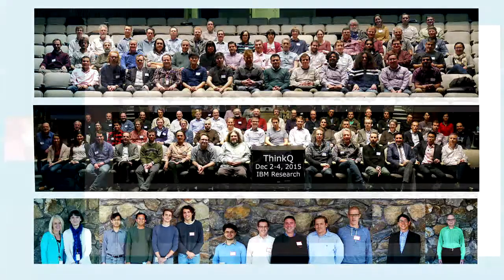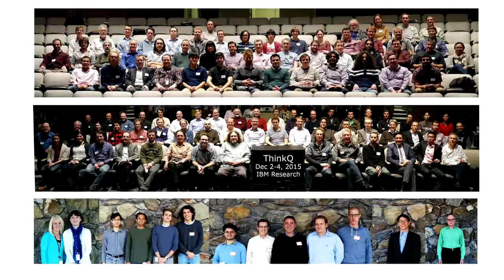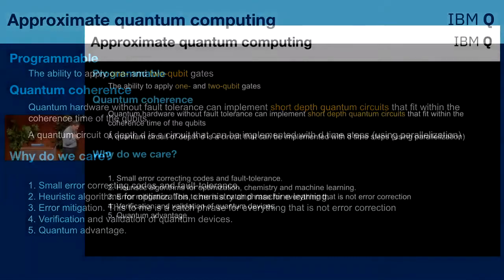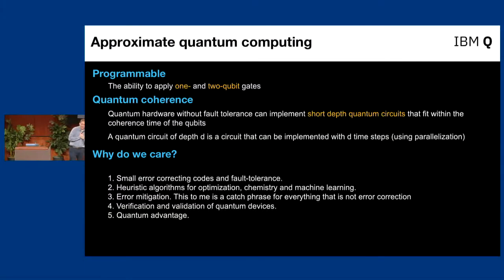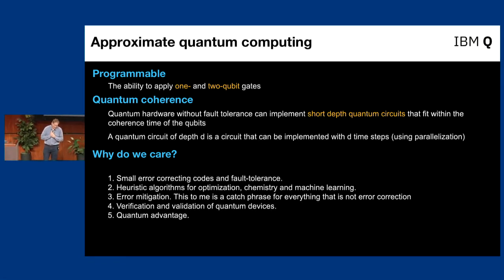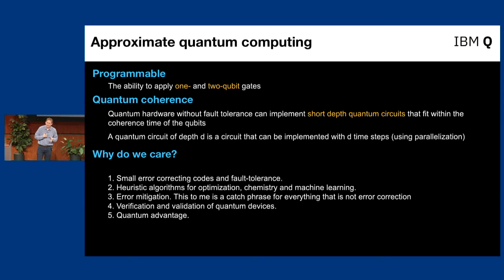So what do I mean by approximate quantum computing? I agree that this is a made-up term — it's not strictly defined. But the next few years is this sort of time where we're not going to have fault tolerance, but we're going to have something which could and should be more powerful than classical, and how we understand that is difficult.